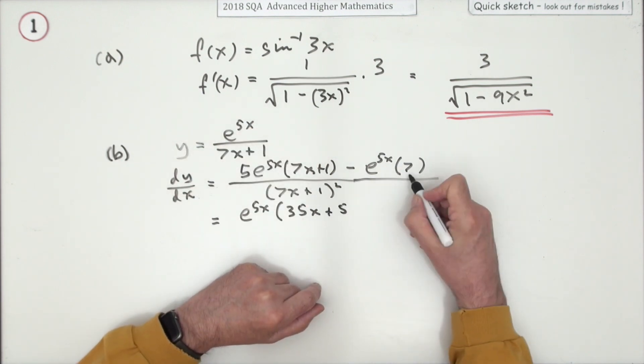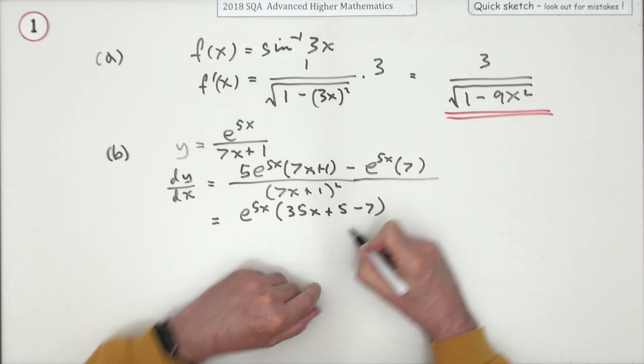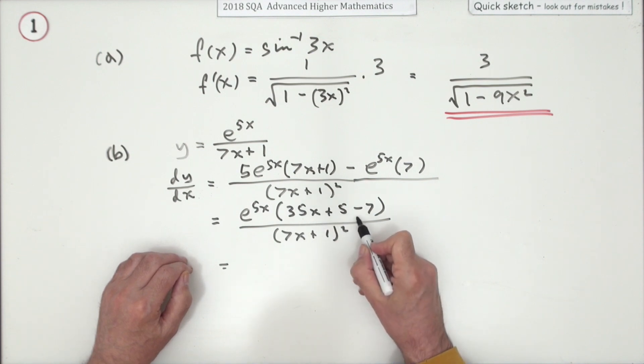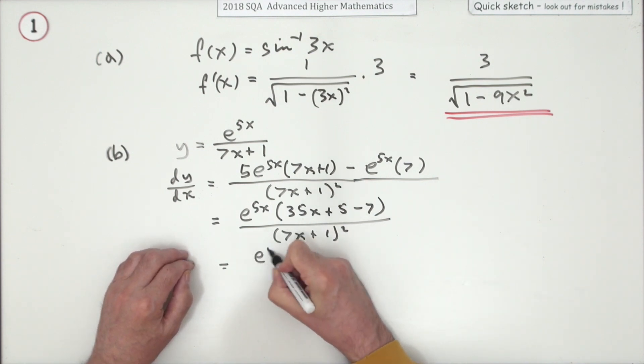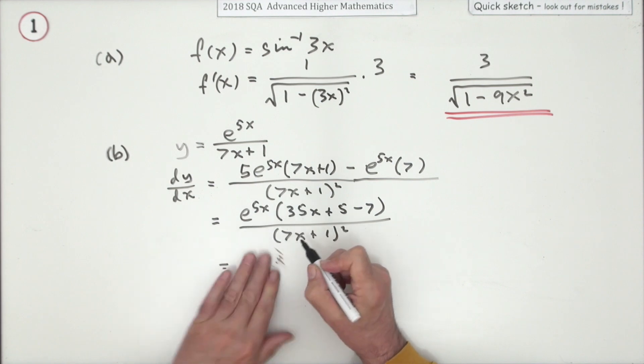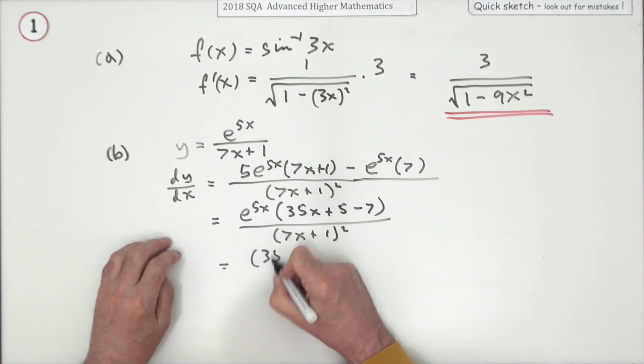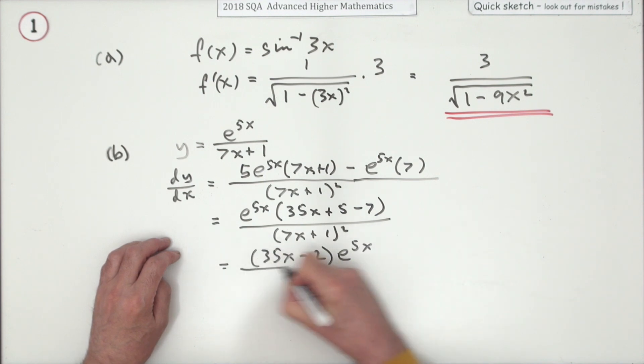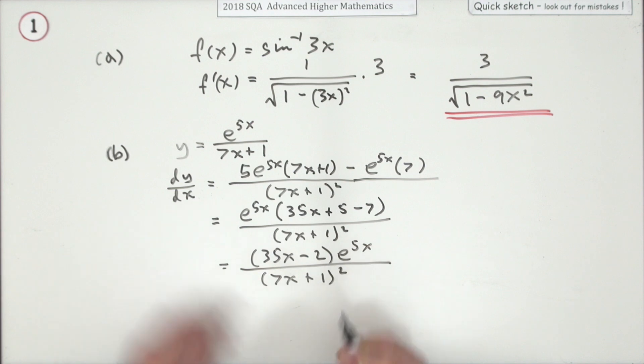But then it'll be minus 7 of these. So that's going to be 35x minus 2. So it's e^(5x), I'm going to write it the other way around: 35x minus 2 times e^(5x) over (7x + 1) squared.